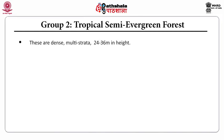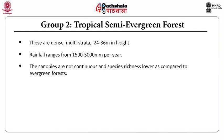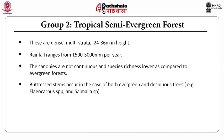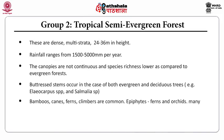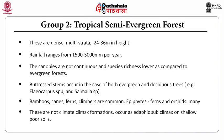Continuing with Group 2 discussion on tropical semi-evergreen forests: these are dense, multi-strata forests with moderately high rainfall. The canopies are not continuous, and species richness is lower compared to evergreen forests. There is the presence of buttress stems in both evergreen and deciduous trees, for example Eliocarpus and Salmalia species. There is the presence of bamboos, canes, ferns, and climbers. Epiphytes are represented by ferns and orchids. These are not climax formations; they occur as edaphic subclimax on shallow, poor soils.